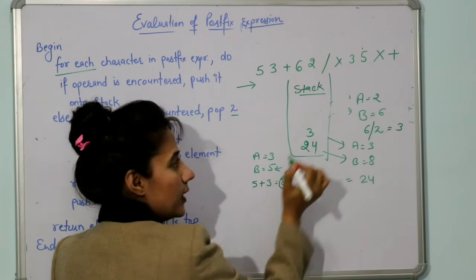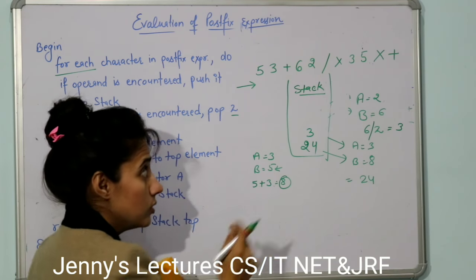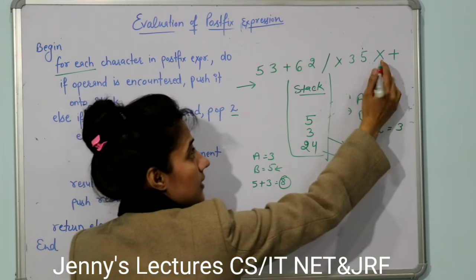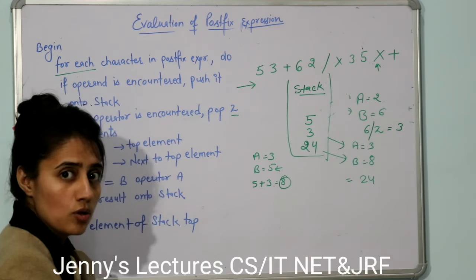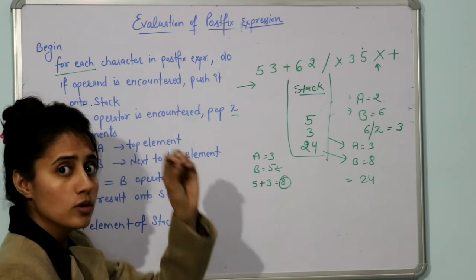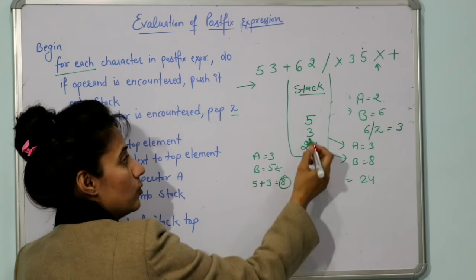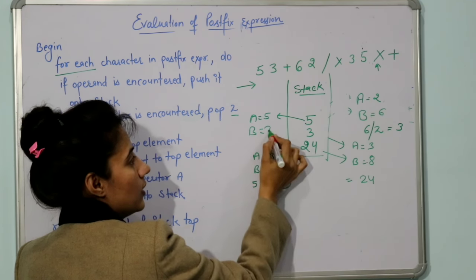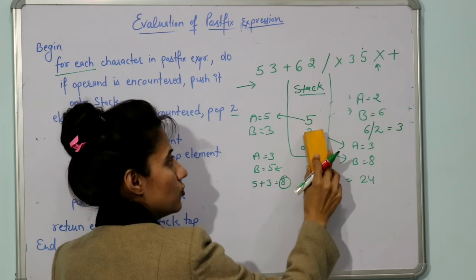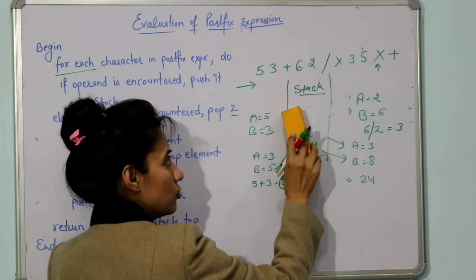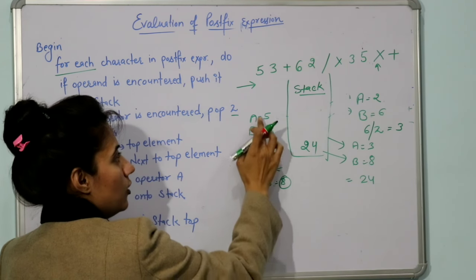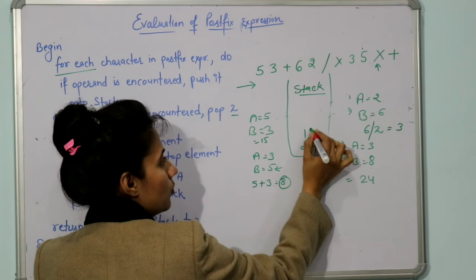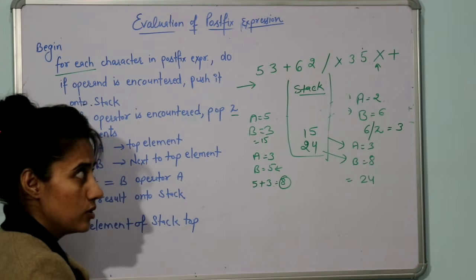Next is 3 — operand — push it. Next is 5 — operand — push it. Next is multiplication — operator — pop 2 elements: A = 5, B = 3. Result is B × A = 3 × 5 = 15. Push 15 back onto the stack.